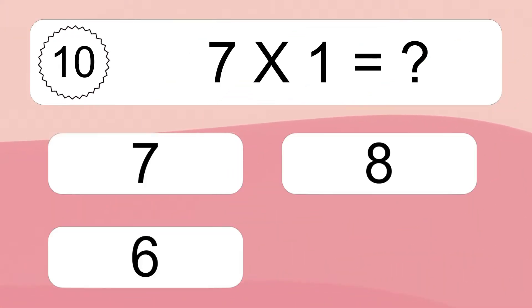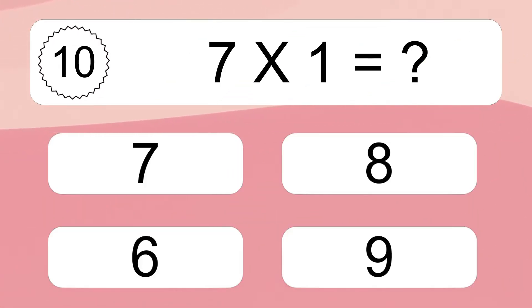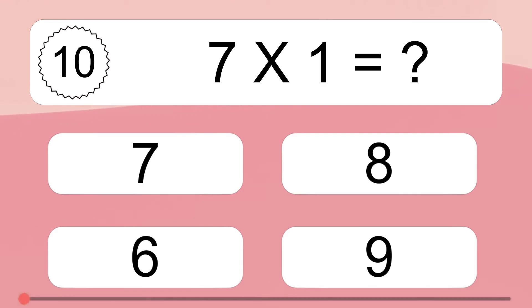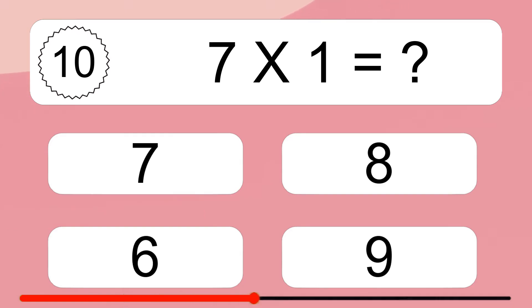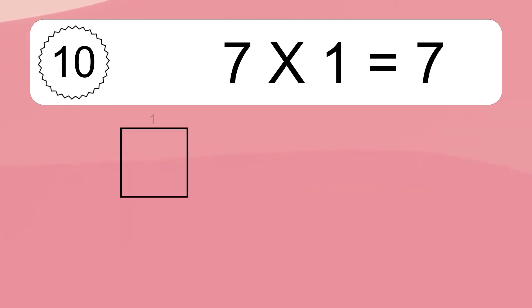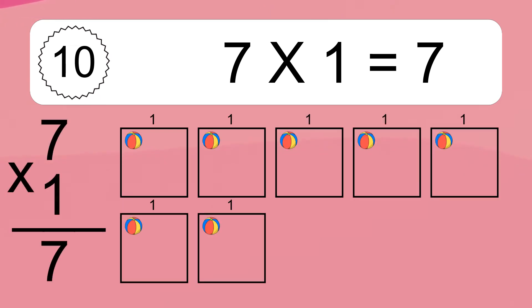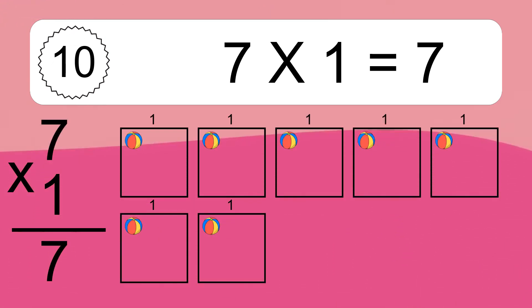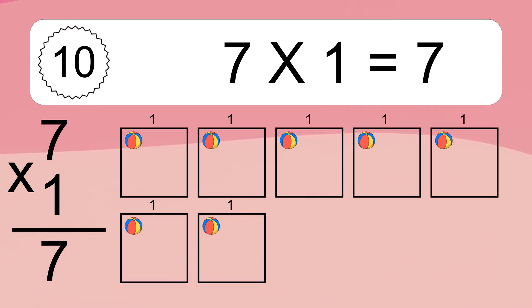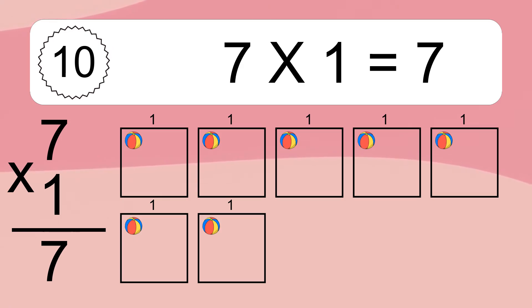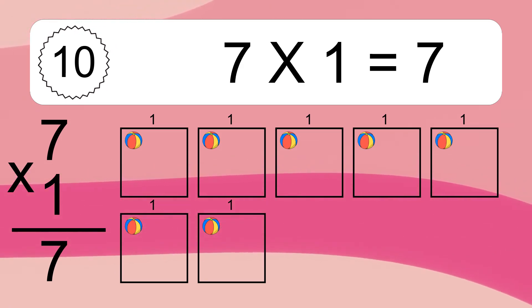7 times 1 equals what? 7 times 1 equals 7. We have 7 boxes, and each box has 1 colorful ball inside. If you count all the balls in all the boxes together, you will have 7 times 1 balls. This equals 7 balls.